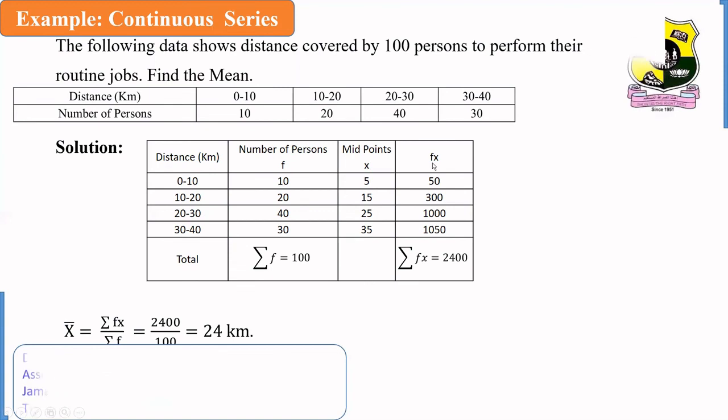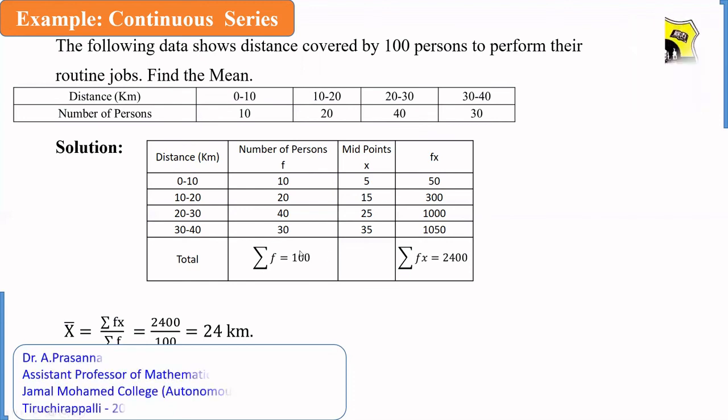Then, we are calculating f into x: 10 into 5 is 50, 20 into 15 is 300, 40 into 25 is 1000, 30 into 35 is 1050. We multiply these values of x with their respective frequencies. Take the total f and fx, apply the formula summation of fx divided by summation of f.